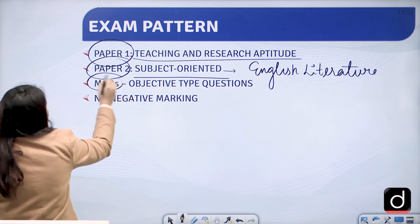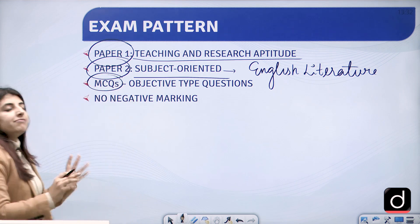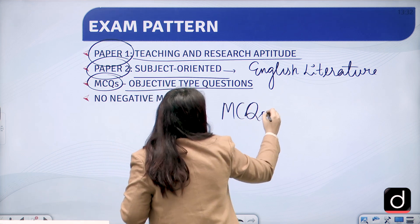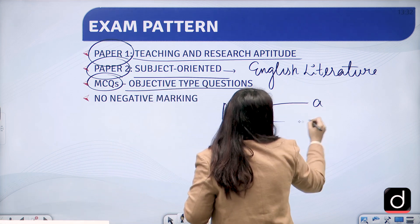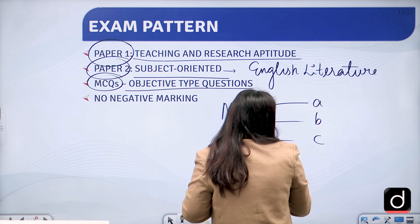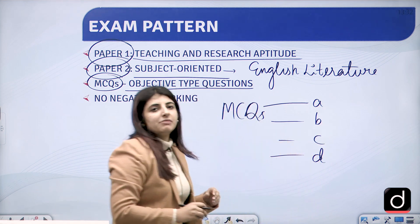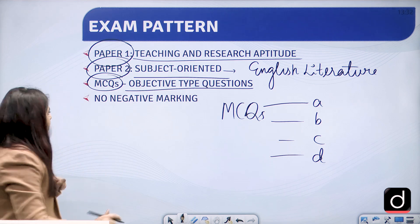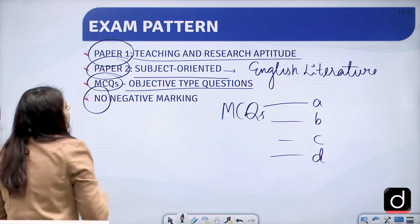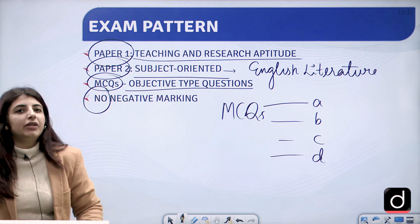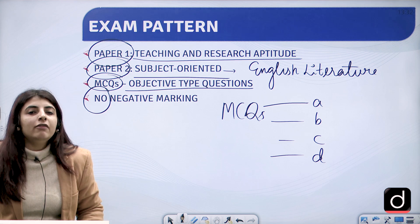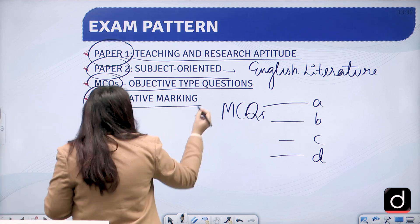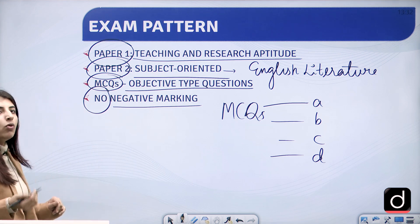Coming to the pattern, it is MCQ type, that is objective type questions. There will be four options — A, B, C, D — and you will get marks accordingly if the answer is correct. Also, there is no negative marking, which is a really good thing, so you can mark as many questions as you want.